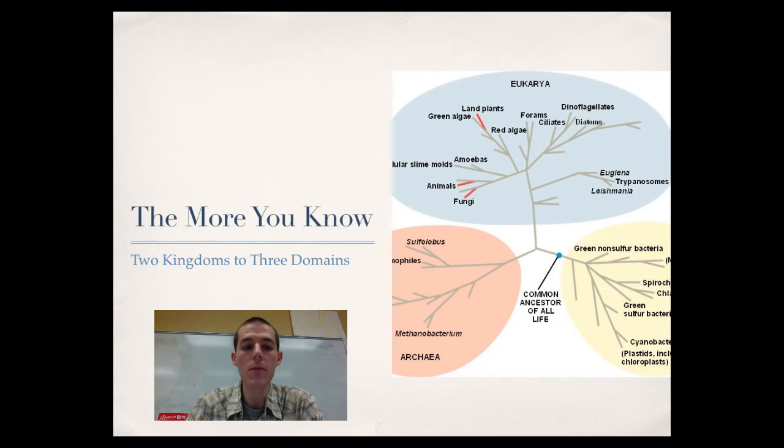So they moved from two major kingdoms, plants and animals, to three domains. And here's kind of how the thinking went. First, they went from two kingdoms to five kingdoms. The five kingdoms that they identified were the monera prokaryotes, protists, plants, fungi and animals. And that was a pretty good system.